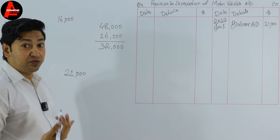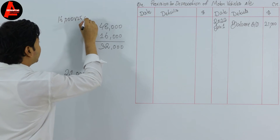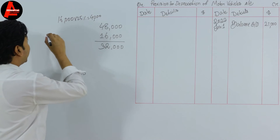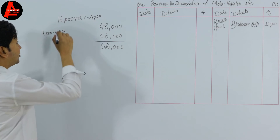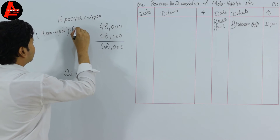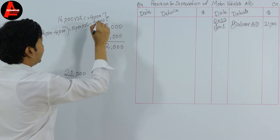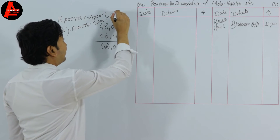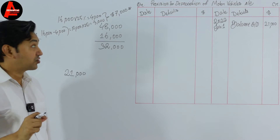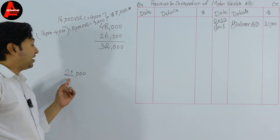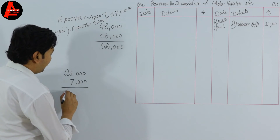The disposed vehicle cost $16,000. In year one, depreciation was 25% × $16,000 = $4,000. In year two, the net book value was $16,000 − $4,000 = $12,000, and depreciation was 25% × $12,000 = $3,000. Total accumulated depreciation on the disposed asset is $4,000 + $3,000 = $7,000. This $7,000 is included within the $21,000 provision.